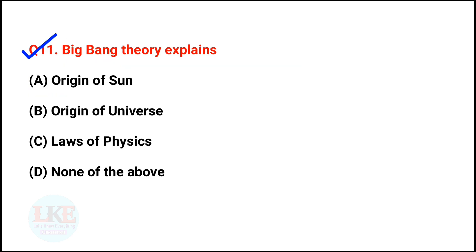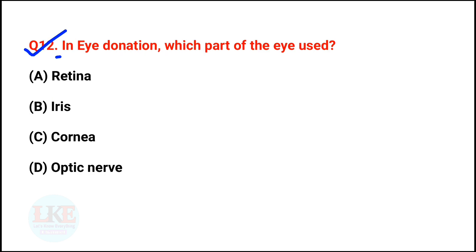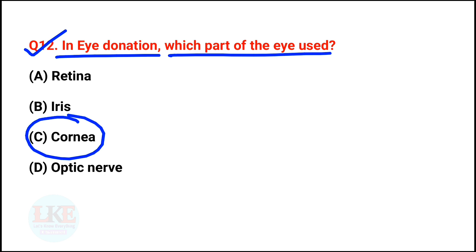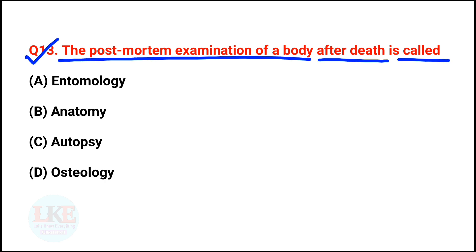Question number 11: the Big Bang Theory explains the origin of the universe — it describes the way the universe began. Question number 12: in eye donation, which part of the eye is used? The right answer is option C — the cornea. Question number 13: the post-mortem examination of a body after death is called an autopsy.